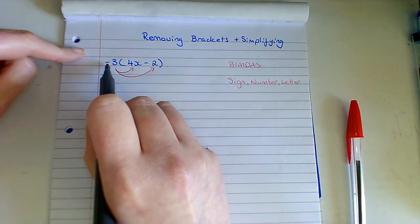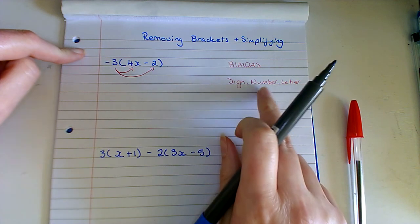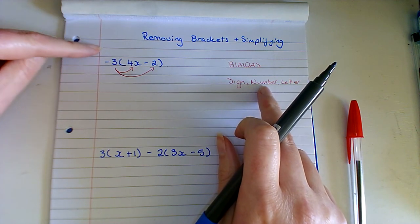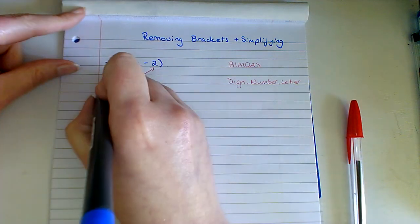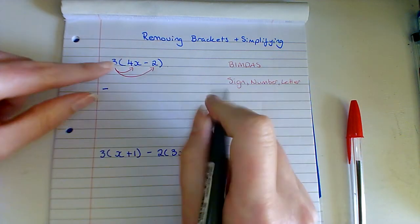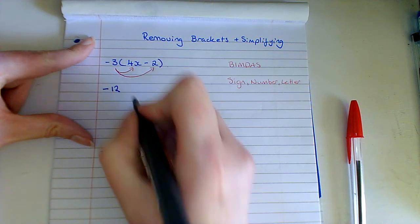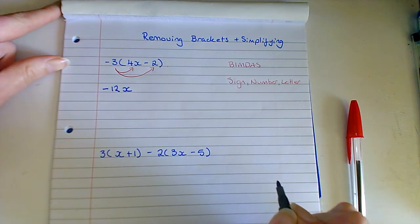So that is minus 3 multiplied by 4x. And here what I'm going to do is I'm going to refer back to this: sign, number, letter. So the first thing we have to check is well we have a minus times a plus, so that's going to make it a minus. And now we're going to do the numbers. So 3 times 4 is 12. And the only letter here that we have to worry about is the letter x.